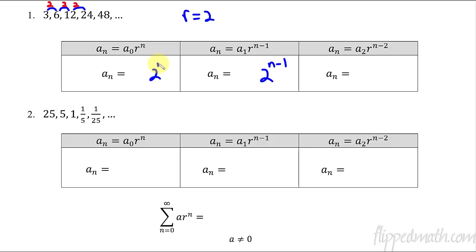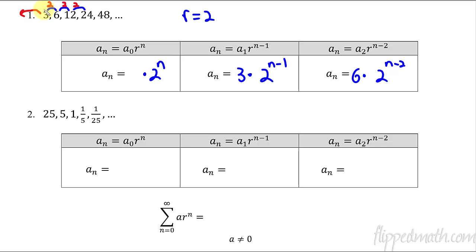That's my common ratio, so I know it's going to involve 2 raised to n minus 1. The very first term was 3, so it's 3 times 2 to the n minus 1. For the second-term version, it's 6 times 2 raised to n minus 2. If I plug in 1, I get 2 to the 0 which is 1, times 3, giving me 3. For the zero term, going backwards you divide by 2, so 3 divided by 2 is 3 halves.